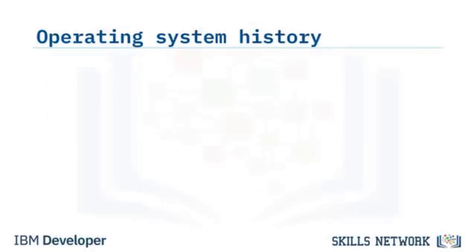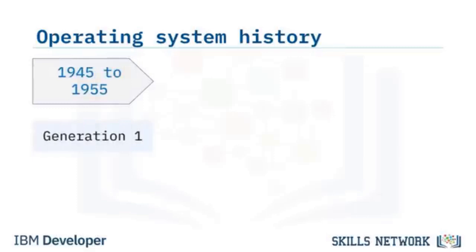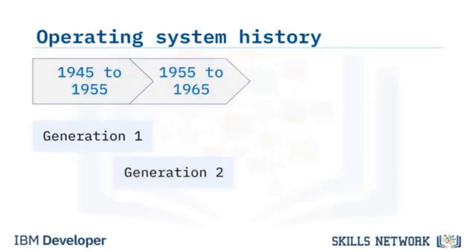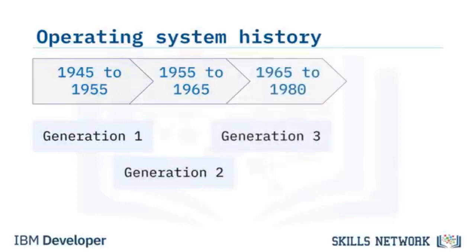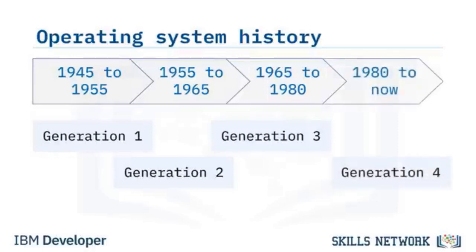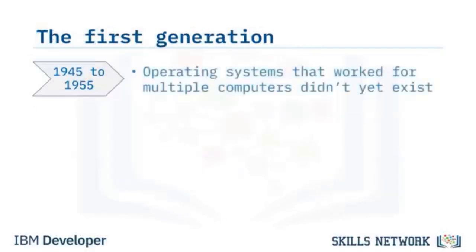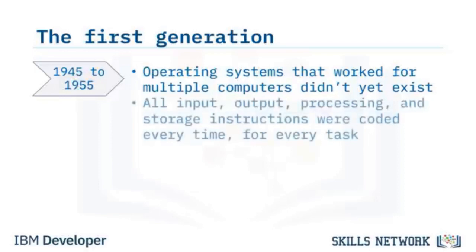History groups operating systems into four generations. The first generation was from 1945 to 1955, the second from 1955 to 1965, the third from 1965 to 1980, and 1980 ushered in the fourth and current generation. During the first generation, operating systems that worked for multiple computers did not yet exist.